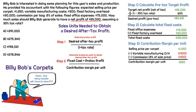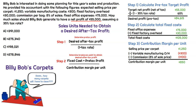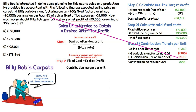Step three is where we calculate the contribution margin per unit. That factors in the selling price per unit and then any variable costs directly attributable to that unit being sold. The selling price per carpet is $1,250 — Billy Bob must do an excellent job. We subtract variable manufacturing overhead of $300, and then there's also commission, which is 8% of each sale. So 8% times $1,250 is $100 of commission per unit sold. Subtracting out those variable costs, we're left with a contribution margin per unit of $850.